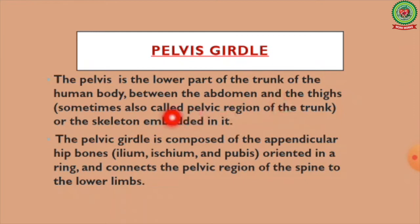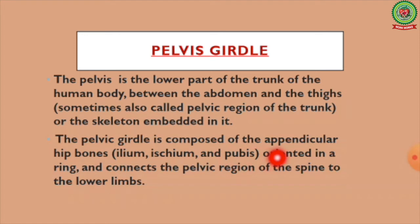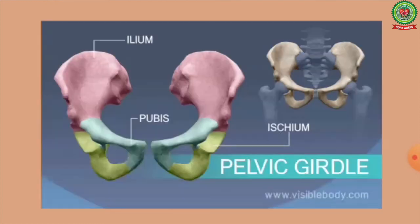Next we are discussing the pelvic girdle. The pelvis is the lower part of the trunk of the human body, between the abdomen and the thighs, sometimes called the pelvic region. The pelvic girdle is composed of the appendicular hip bones — ilium, ischium, and pubis — oriented in a ring, and connects the pelvic region of the spine to the lower limbs.